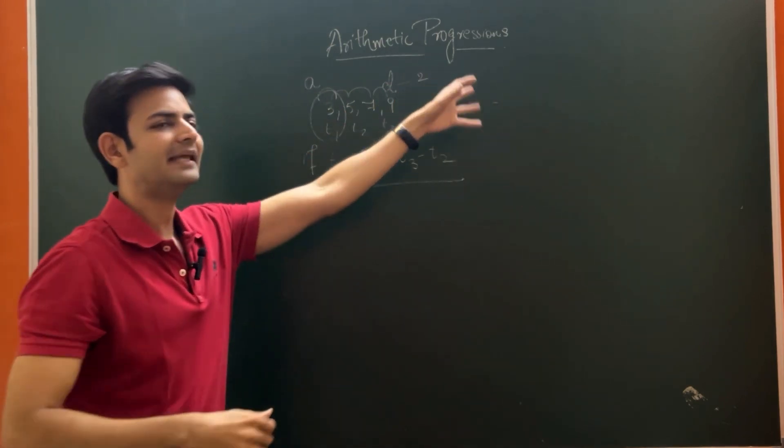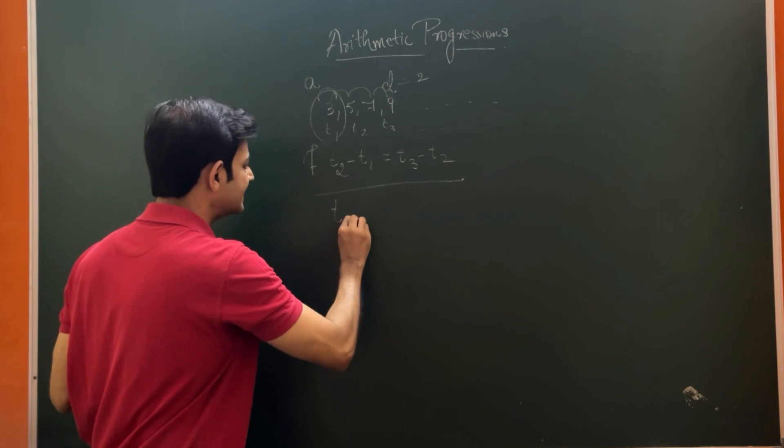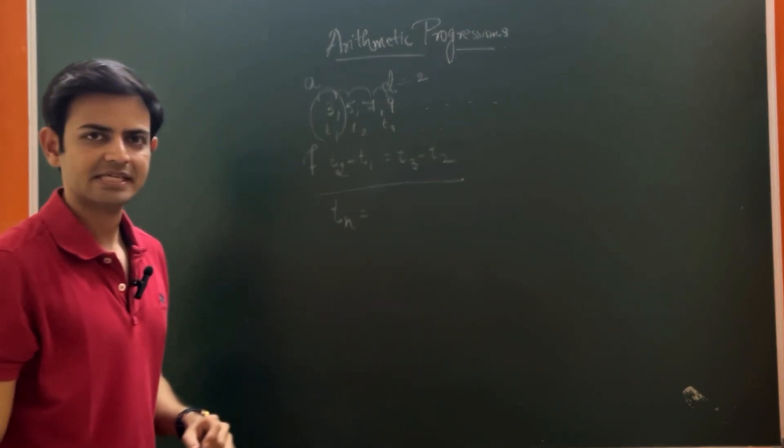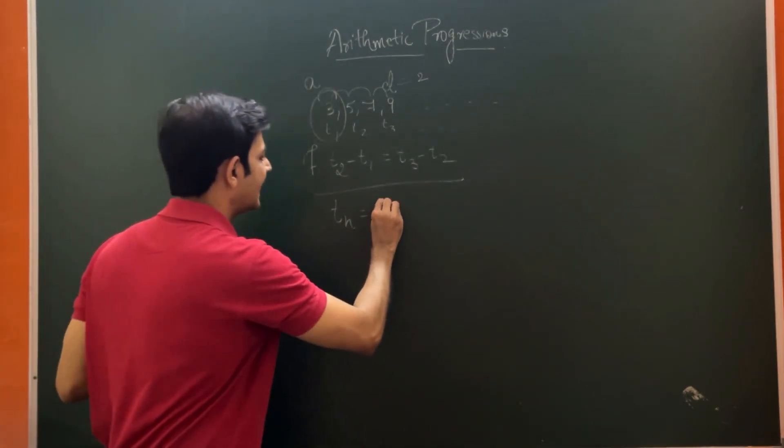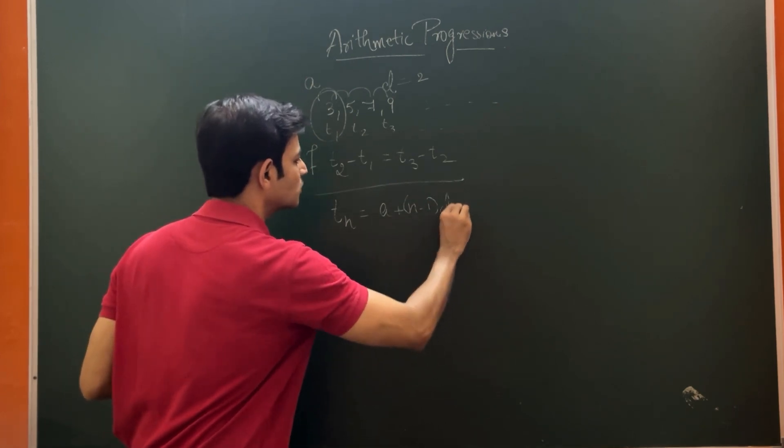In case for this series, I have to find out some nth term, let's say 20th term. The formula for nth term, that is Tn, is equal to A plus n minus 1 into D.